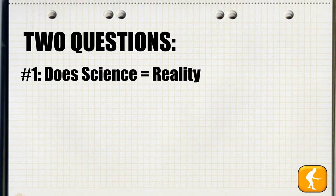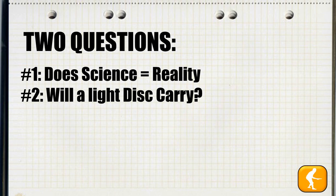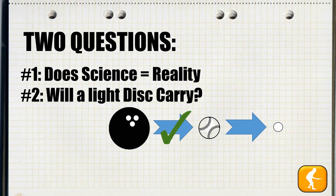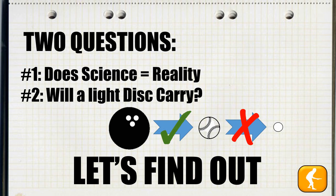This raised two immediate questions for us. Number one: does science equal reality? Number two: will a light disc carry? For example, can I throw a baseball farther than a bowling ball? Yes. Can I throw a ping pong ball farther than a baseball? No. Even though the ping pong ball has lighter weight, there's a point at which the reduced mass has a negative return effect versus the wind resistance it's going to experience. How does that balance out with disc selection? Well, let's find out.